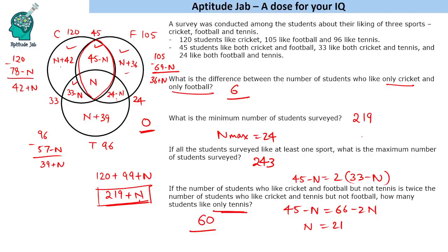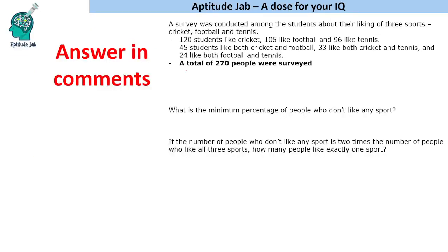So the answers are: 6, 219, 243, and 60. I also have a couple of homework questions for you to answer in the comments. Given that a total of 270 people were surveyed — including some who don't like any sport — what is the minimum percentage of people who do not like any sport? And if the number of people who don't like any sport is twice the number who like all three sports, how many people like exactly one sport? Please like this video and answer these questions in the comments. Thank you.